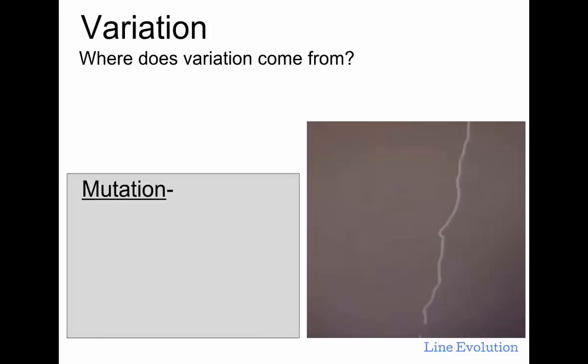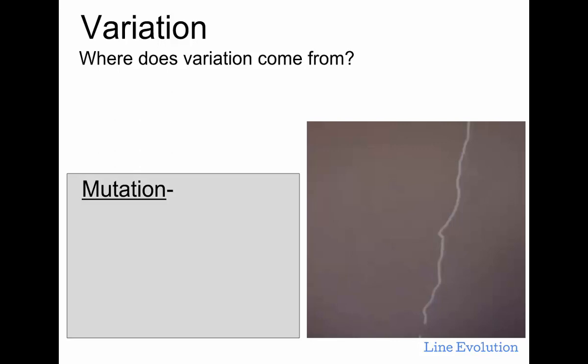So that leads us to this question: why are we all different from each other? There are a couple of important reasons — things that contribute to the variation we have. First is sexual reproduction. There's much more variation in organisms that reproduce sexually than those that reproduce asexually. Asexual reproduction produces offspring that are like copies, so there's not much variation introduced. However, in sexual reproduction we have the mixing of genes and DNA from two separate parents, resulting in a new combination in the offspring.